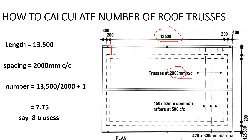Because we cannot use 7.775, we round up — we will need approximately eight trusses. When building the roof, we just need to place eight trusses. It's good to know the number so that when you are preparing the trusses, you don't make extra or too few.